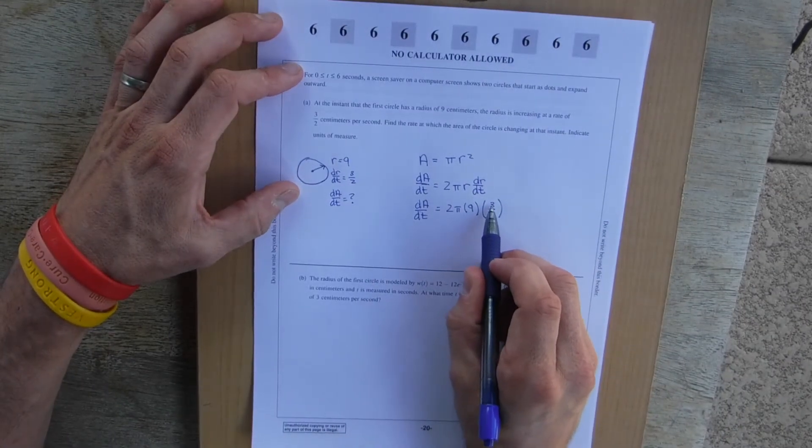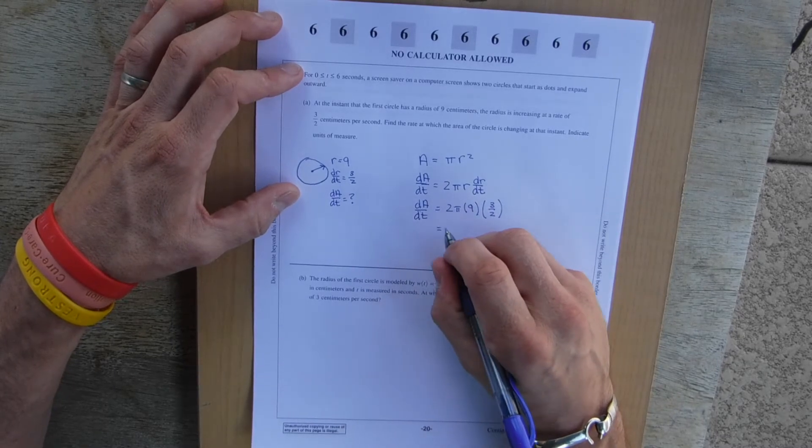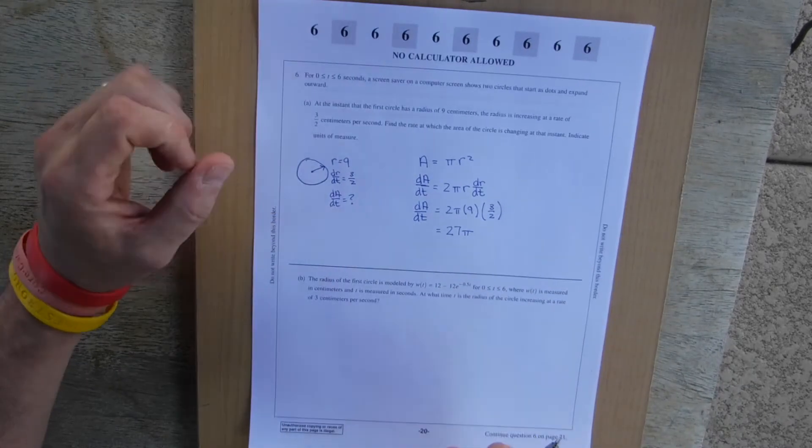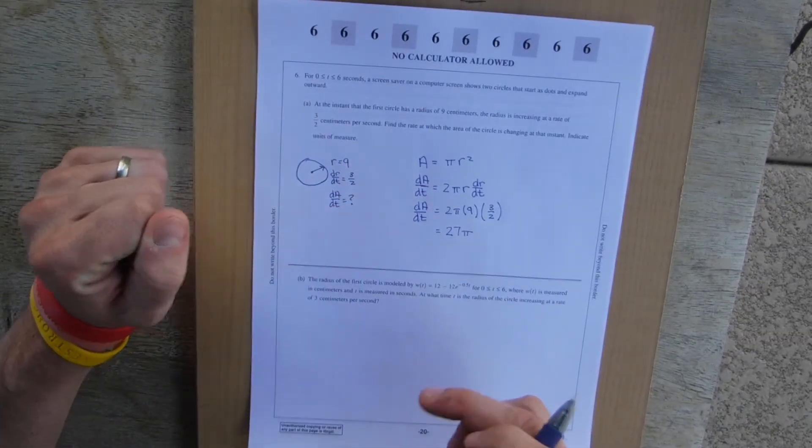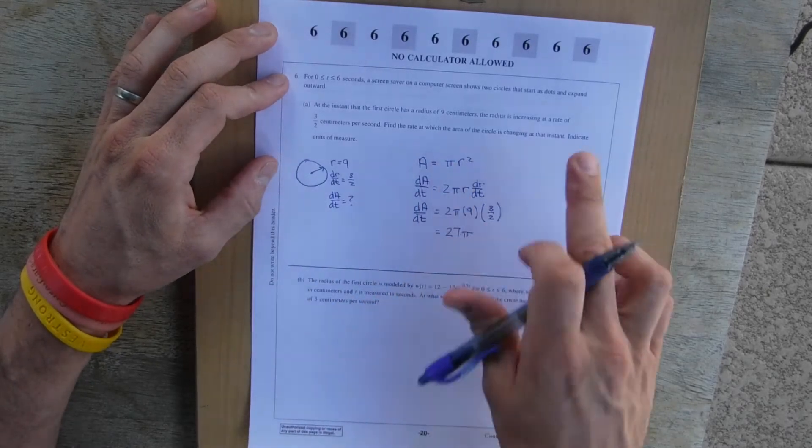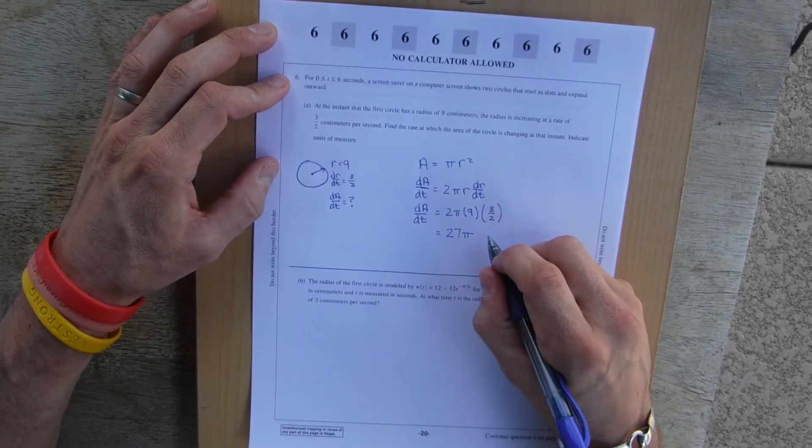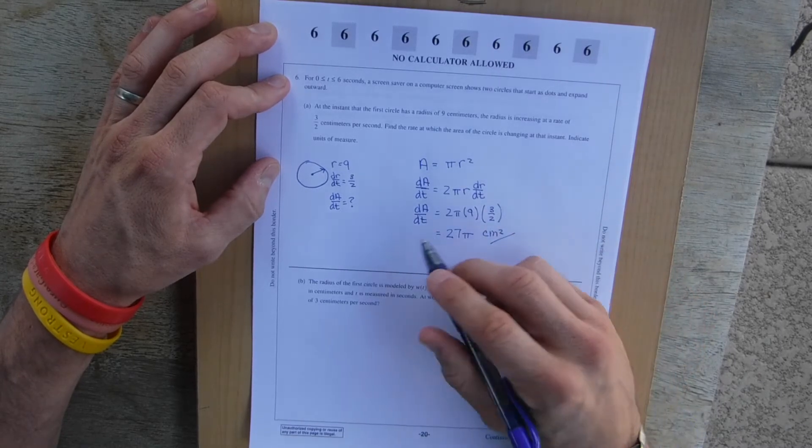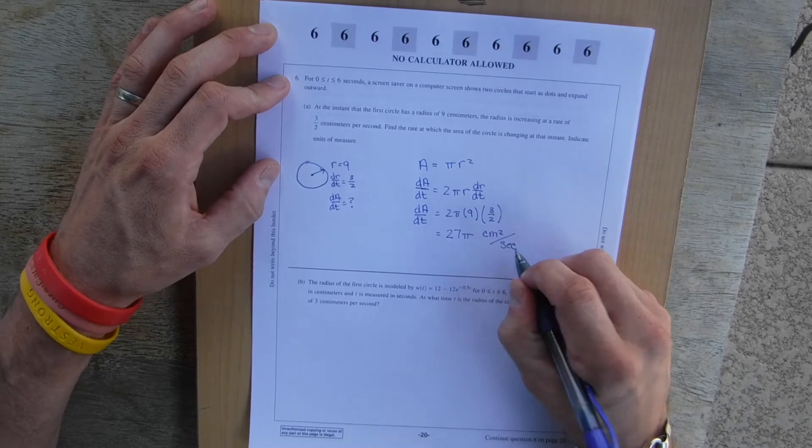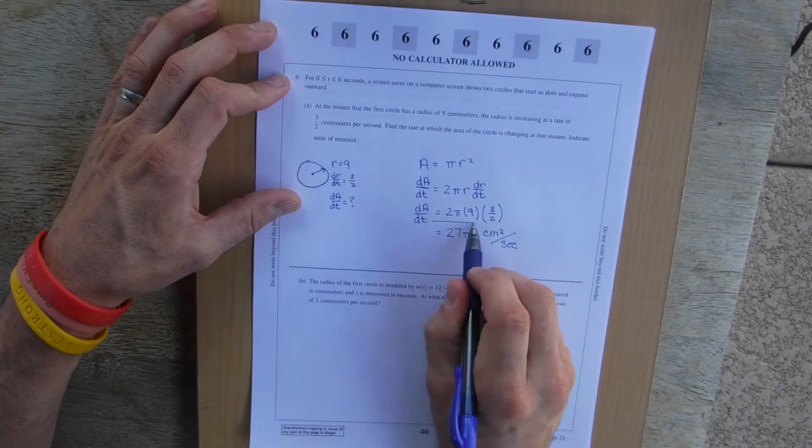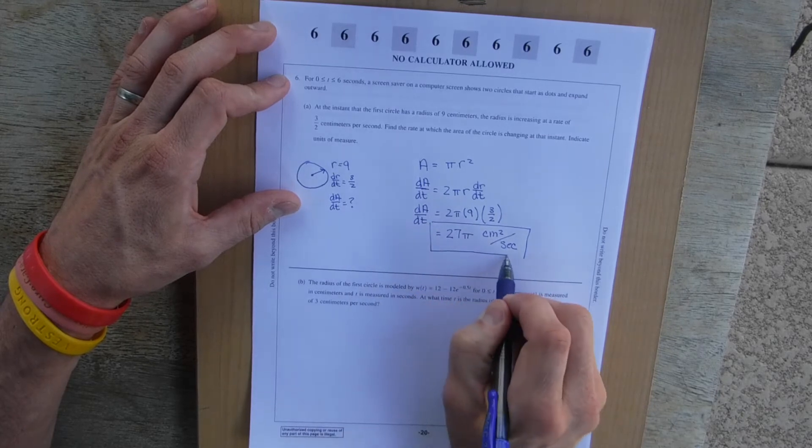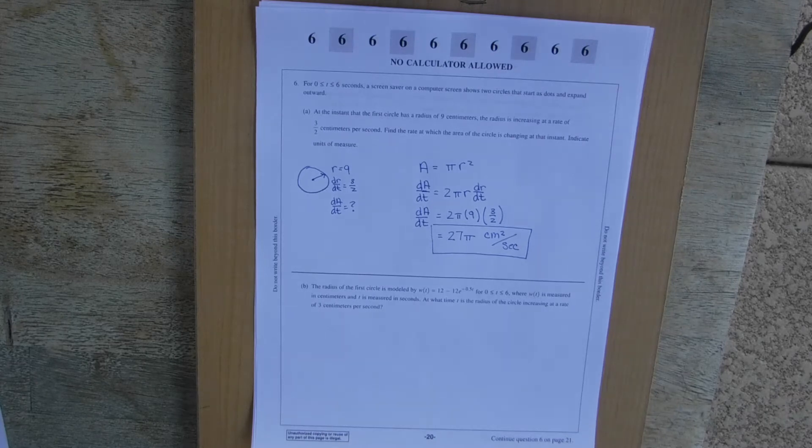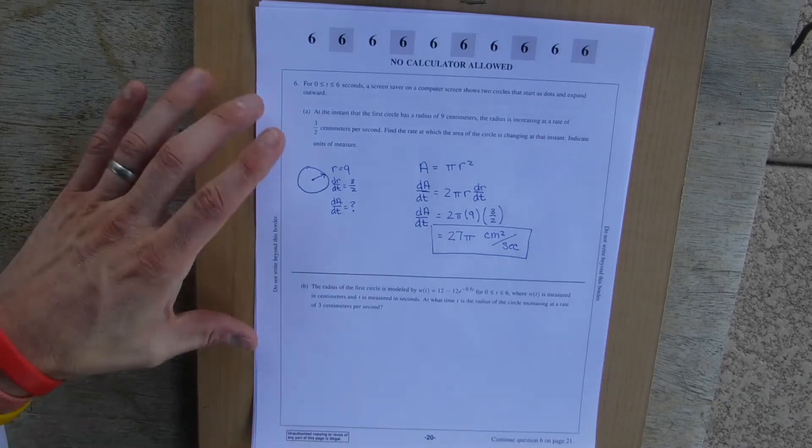So this is this. Okay, so 2, 2, so this just leaves a 3. 3 times 9 is 27. So this is going to be 27π. Okay, so this area is changing at 27π. So let's make sure we indicate the units. Area is going to be centimeters squared, area over time which is seconds. So this is going to be 27π centimeters squared per second.